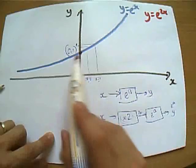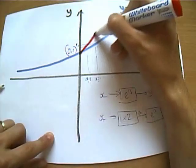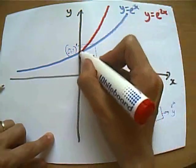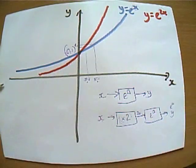So e to the 2x, it will still go through this point, because when you double 0, it's still 0. It is going to go up, it's going to get twice as steep, twice as quickly. It's going to get steeper twice as quickly. So effectively, it's going to look like that.